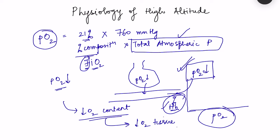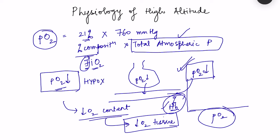This fall in oxygen content means less oxygen is delivered to tissues — this is hypoxia. The ascent to high altitude leads to hypoxia due to a decrease in the partial pressure of oxygen in the blood, which is known as hypoxemia. Hypoxemia leads to hypoxia, and this is termed hypoxic hypoxia. At high altitude, the main problem is hypoxic hypoxia.